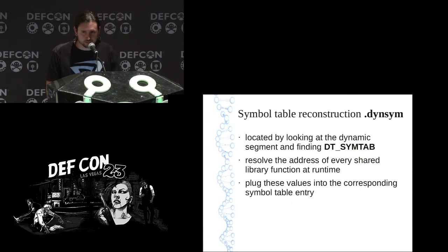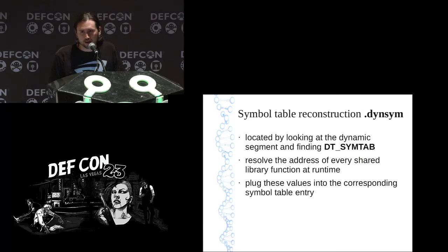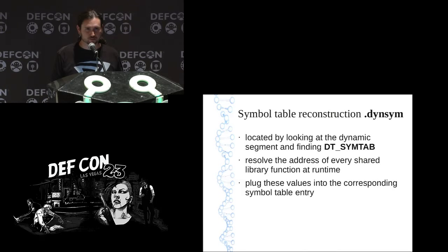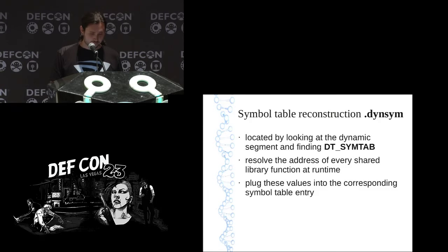For the dynamic symbol table — symbols for functions like printf, fgets, strcpy — ECFS locates the dynamic segment in memory, which is needed by the dynamic linker, finds the DT_SYMTAB tag, then resolves the address of every single shared library function and plugs the addresses into the corresponding symbols. This gives complete symbol table reconstruction.